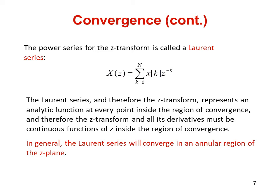Some of the properties of the region of convergence are: the ROC cannot contain any poles. If X[n] is a finite duration sequence, then the ROC is the entire Z-plane except possibly Z equals 0 or |Z| equals infinity. For the ROC to be present, X[n] times z^(minus n) must be absolutely summable.